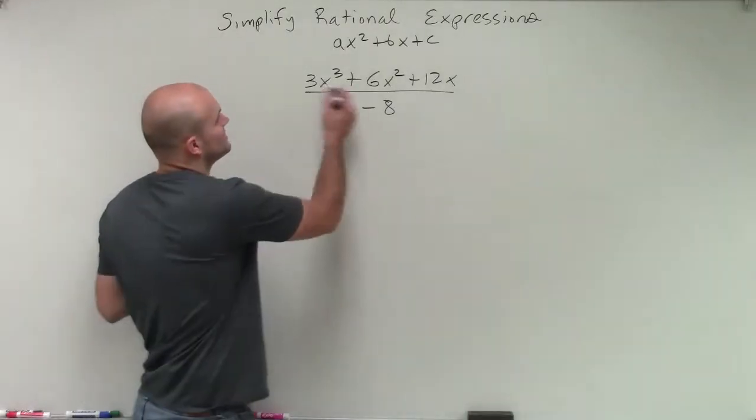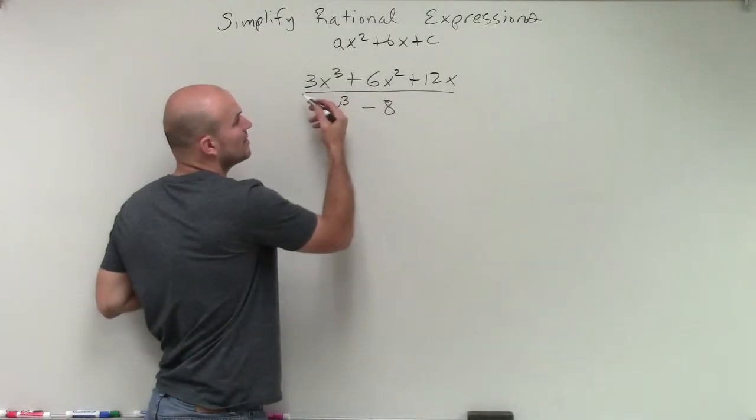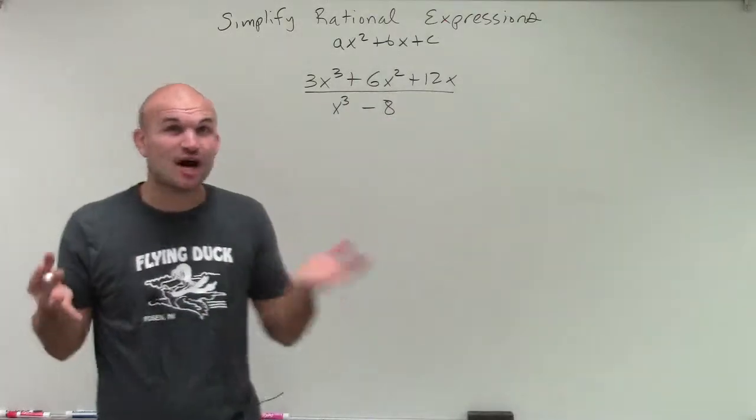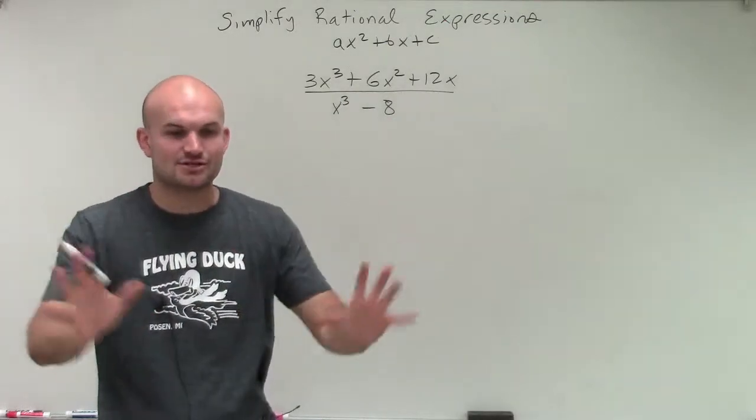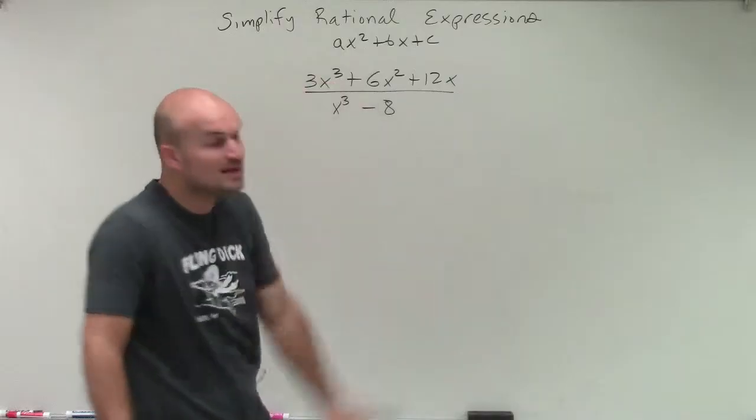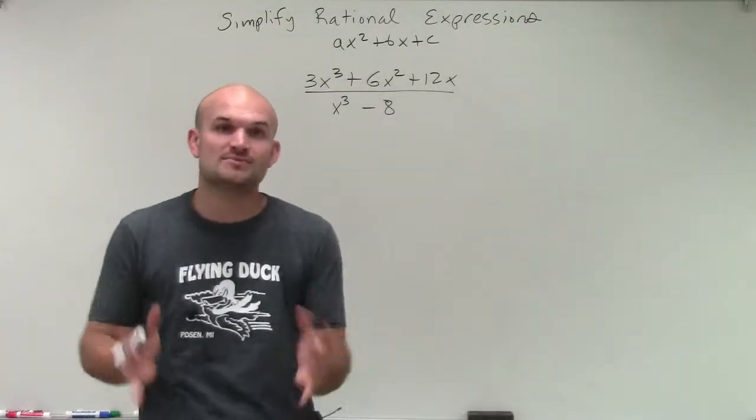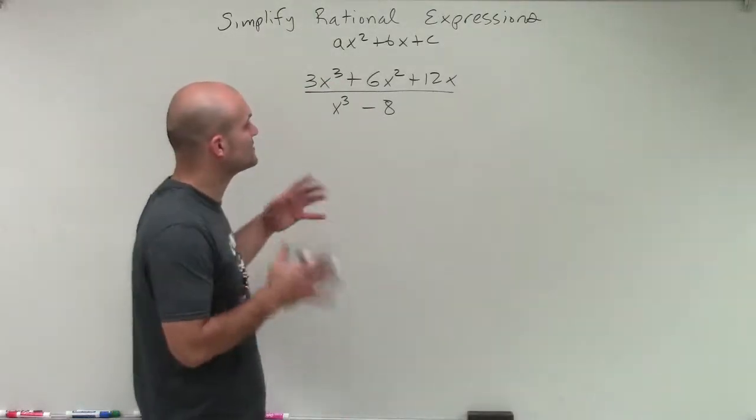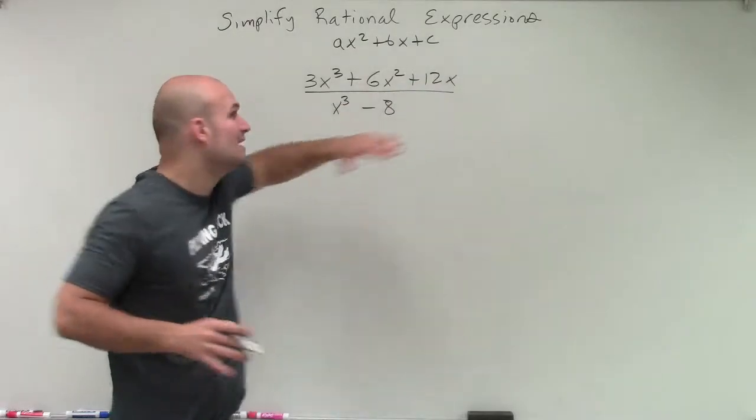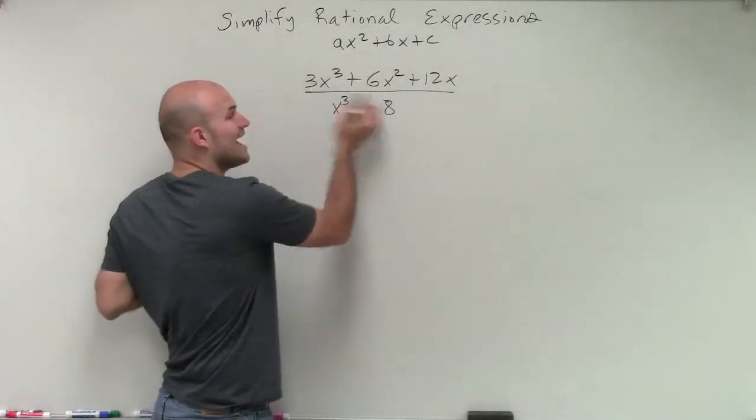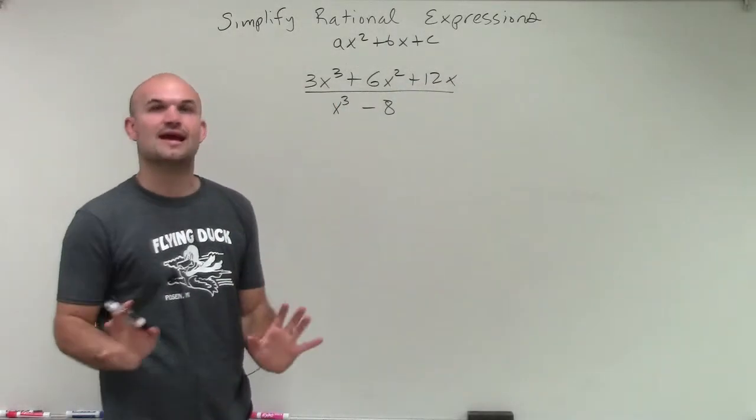So before even getting crazy, I noticed that I can simplify my numerator because they have a GCF. That's always the first thing. We don't want to make things so complicated. Just because we see a cube, don't say I don't know how to factor with cubes. Let's just break this down very simply and say, all right, they have a GCF. I can factor out actually an x. That's going to make that x squared.